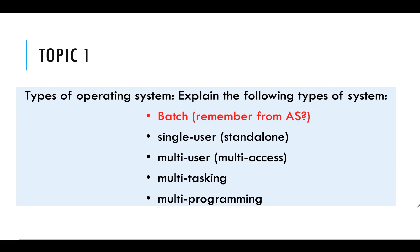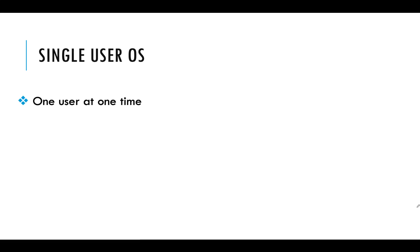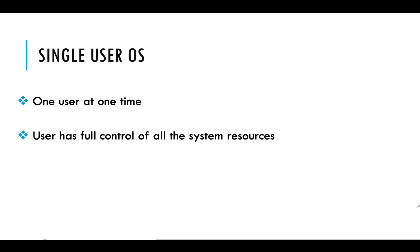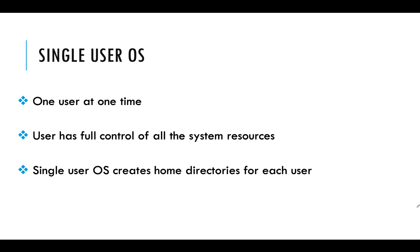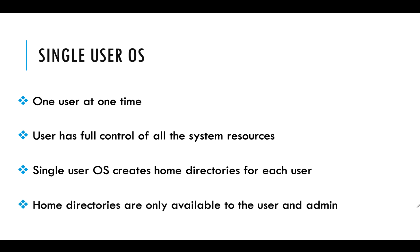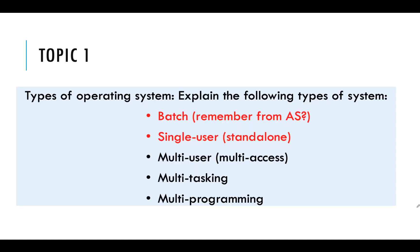The next thing to look at is single user operating systems. This is when one user uses a system at one time and they have full control over all of the system resources and processor time. A single user operating system will create home directories, documents and picture folders for each user that is logged in, and those home directories are only available to that user or the admin — no multiple logins here.